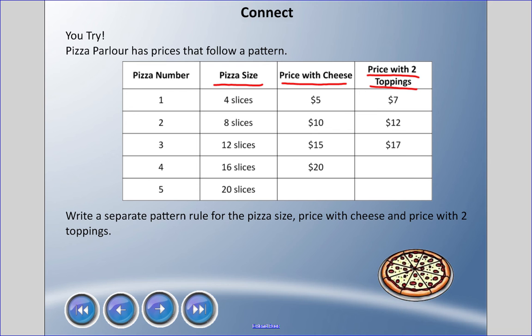I've asked you to find a pattern rule for pizza size, the price with cheese, and the price with two toppings. Pause that and check out if your answers are correct. Pizza size: start at four, and we're adding four each time. The price with cheese: we're starting at five dollars - it's important to put the unit in there - start at five dollars, and we're adding five dollars each time.